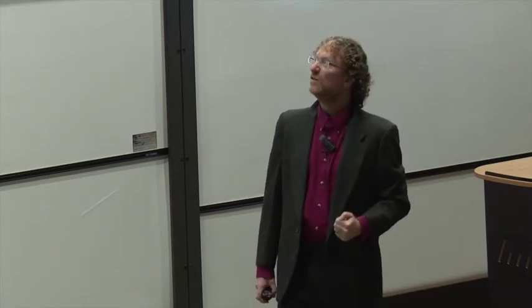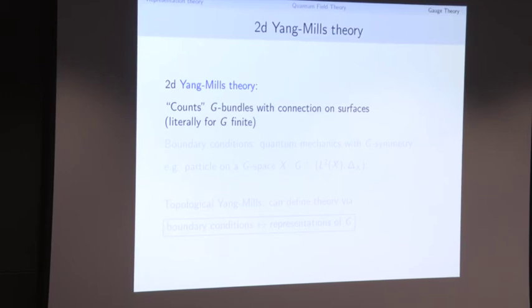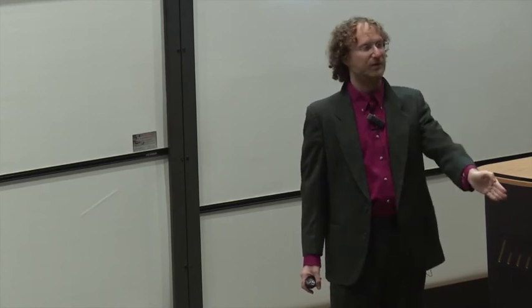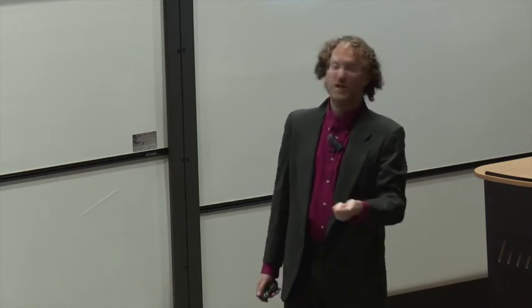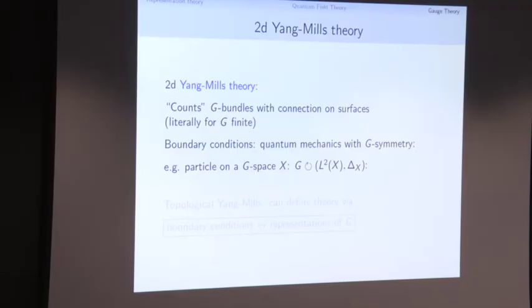The first place to see this is in two dimensions — two-dimensional Yang-Mills theory, topologically. We count G-bundles with connections on a real surface; if G is finite, the count is literal. What are boundary conditions in two dimensions? The boundary is one-dimensional, so a boundary condition is a one-dimensional field theory — a quantum mechanics theory with G-symmetry. For example, a particle in a G-space, like a particle on the two-sphere with SO(3) action — that's exactly the kind of quantum system that gives a boundary condition for SO(3) Yang-Mills theory.